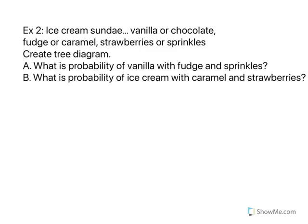OK, let's go ahead and look at our second example. We're talking about ice cream sundaes. Vanilla or chocolate. There's your first decision. Then fudge or caramel. Can't say both. And then the third option is strawberries or sprinkles. So we have three options, each with two choices.